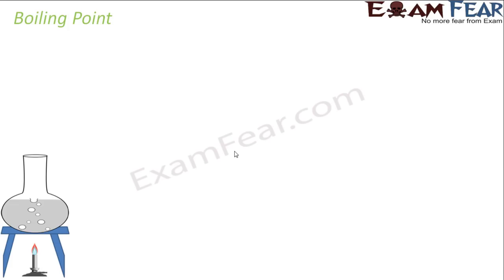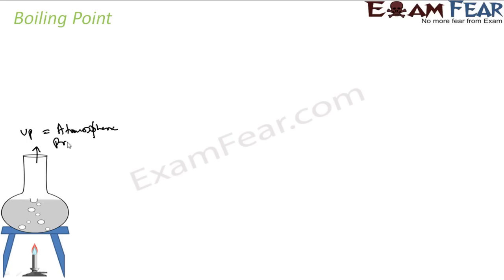There are three factors that govern the boiling point. First, a liquid will boil when its vapor pressure is equal to the atmospheric pressure. For example, you take a glass of water in a steel utensil, heat it — the moment it starts boiling you'll see bubbles coming up. It boils when its vapor pressure is equal to atmospheric pressure, if you do this in an open container. The pressure here is nothing but atmospheric pressure, so when the vapor pressure of this liquid equals the atmospheric pressure, it will start boiling.